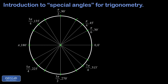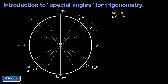Adding another 30 degrees gives 60 degrees. In radians, pi over 6 plus pi over 6 is 2 pi over 6, which reduces to pi over 3. That completes the first quadrant special angles. Moving into the second quadrant: 30 degrees past 90 is 120. In radians, pi over 2 plus pi over 6 — getting a common denominator, pi over 2 is 3 pi over 6, so 3 pi over 6 plus pi over 6 gives 4 pi over 6, which reduces to 2 pi over 3.